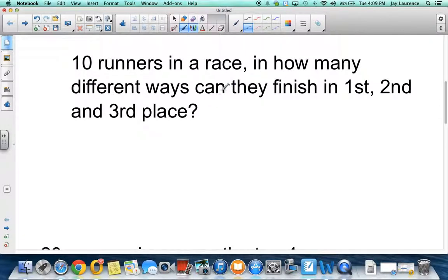Let's look at some other examples and see if we can figure out if they're a permutation or a combination. Ten runners in a race. In how many different ways can they finish in first, second, and third place? Let's pretend it's the Olympics, and let's pretend the first place gets a gold medal, the second place gets a silver medal, and the third place gets a bronze. Well, here's how you decide if the order matters or not. You write down an outcome. Let's say Bob was in first, Tom was in second, and Sue was in third. So we got first, second, third. So Bob got the gold medal, right?